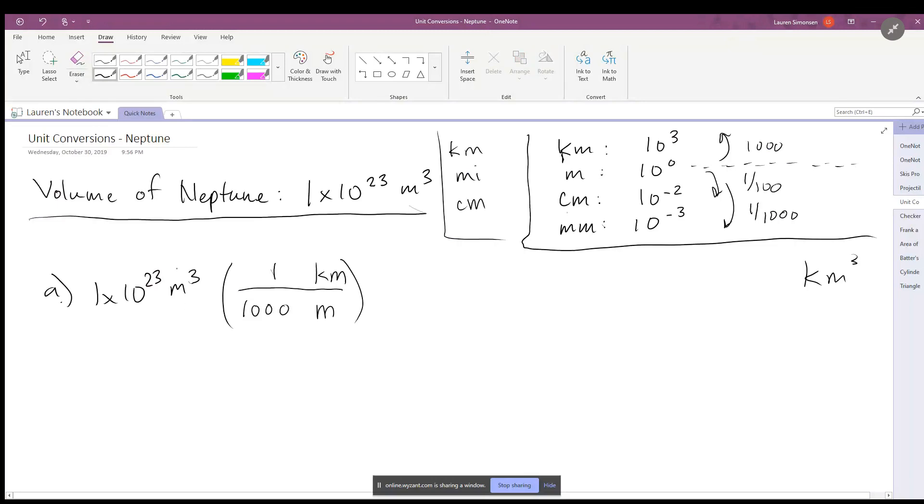And now meters should cancel and you should be left with kilometers. However, this is what makes this problem tricky: everything needs to be cubed. Everything needs to be cubed. So this means 1 needs to be cubed, the kilometers needs to be cubed, the thousand needs to be cubed, the meters has to be cubed.